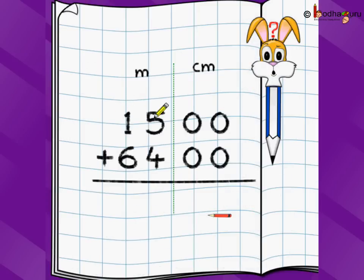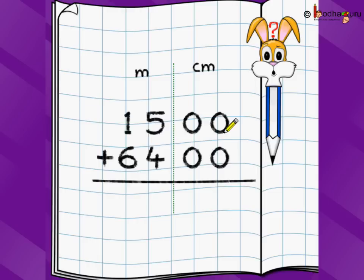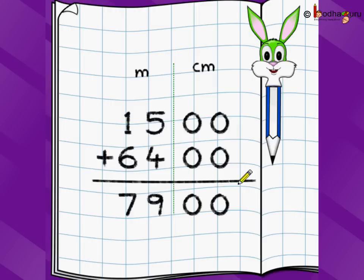Let's say we take a problem which has meters as well as centimeters. We have 15 meters and 00 centimeters, and we want to add it with 64 meters and 00 centimeters. The good way to write this is to write meters and centimeters separately — meters value below meters, centimeters value below centimeters. Even if there are no centimeters, we write 00, because 1 meter equals 100 centimeters. We start from the rightmost digit — 0 plus 0 is 0, 0 plus 0 is 0, 5 plus 4 is 9, and 1 plus 6 is 7.